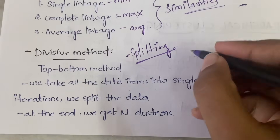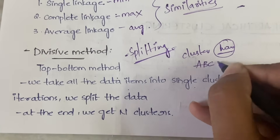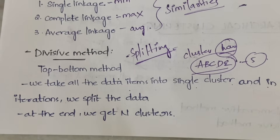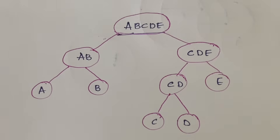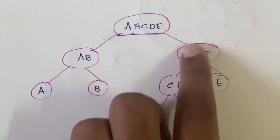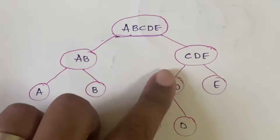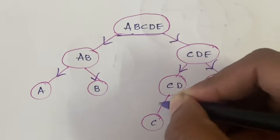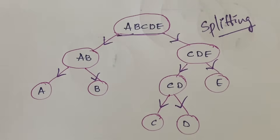At the end of divisive clustering you will get n clusters, where n is the number of data items initially. For example, with data items a, b, c, d, e — five items — you start with one cluster containing all five. You then split: AB as one group and CDE as another, then A and B separate, then CDE breaks into CD and E, and finally C and D separate. The direction goes from top to bottom — you are splitting, not merging.